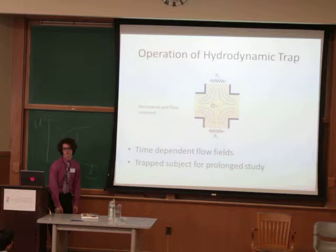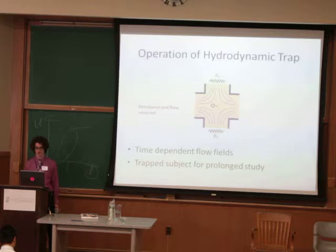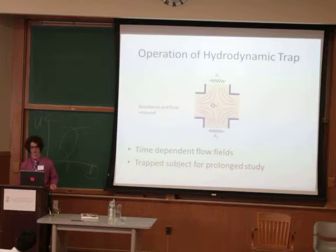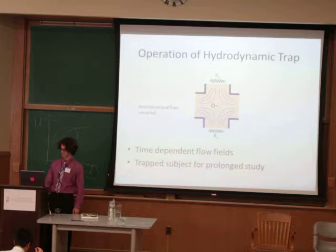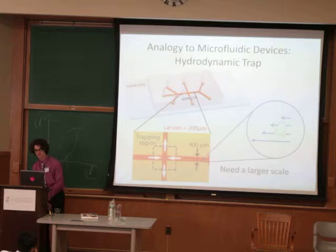The hydrodynamic trap lets you subject your larva to time-dependent flow fields — more complex than still flow fields. In addition, you can trap an actual individual for a long period of time, which is important because in biology there's large variation between individuals. This has been done before at the micro scale with microfluidic devices, but those are far too small — 400 micrometers is about twice the size of the larvae we're interested in, so we needed to build this at a larger scale.